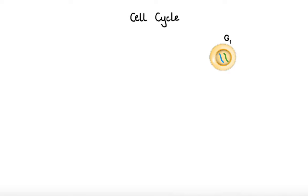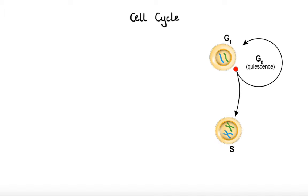At this point, under certain conditions, a cell can exit the cell cycle and remain in the so-called G0 phase as a non-dividing, non-growing, quiescent cell. But if the cell progresses, it will enter the second phase, known as the S or synthesis phase, in which DNA replication occurs. During this phase, the cell makes an identical copy of each of its chromosomes.